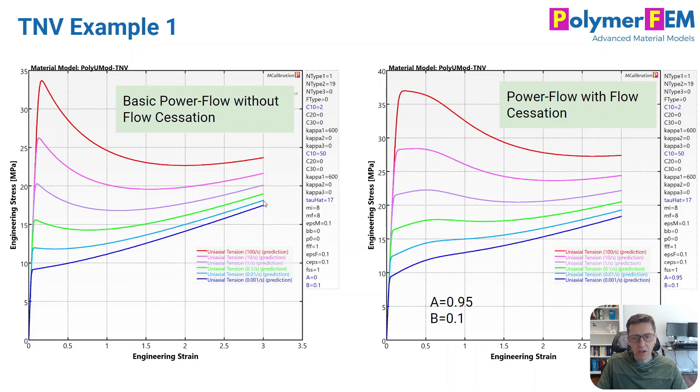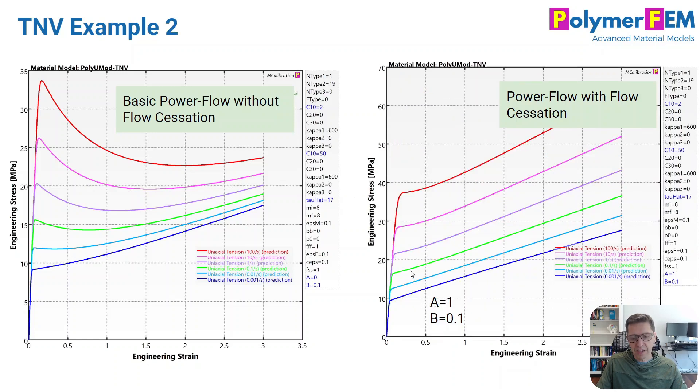So when I turn on this flow cessation factor, in this case I set a equal to 0.95 and b equal to 0.1, I get them to distribute a little bit different here. I get a little bit more flat curves and they're a little bit wider apart here. If I then instead make a equal to 1 and keep the b value, I get this response. I can clearly, using this flow cessation parameters a and b, control how these curves react to strain rate at large strains. And it's a powerful tool for predictions then.